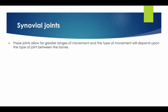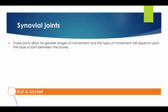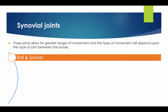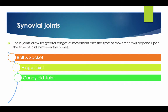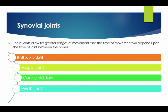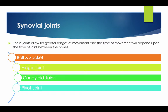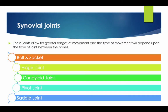Synovial joints allow for greater ranges of movement, and the type of movement will depend upon the joint between the bones. There are five types of synovial joints: the ball and socket, the hinge joint, the condyloid joint, the pivot joint, and the saddle joint.